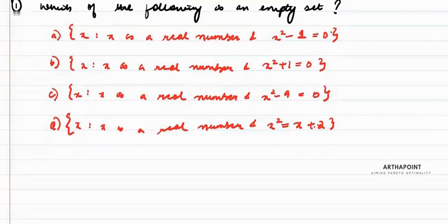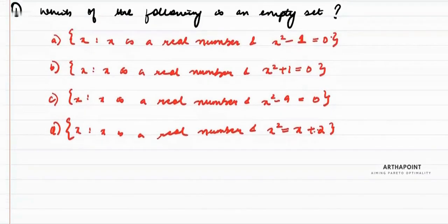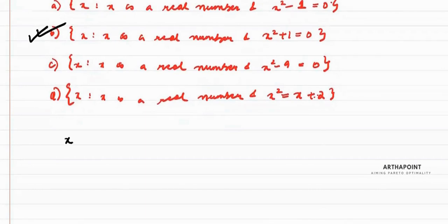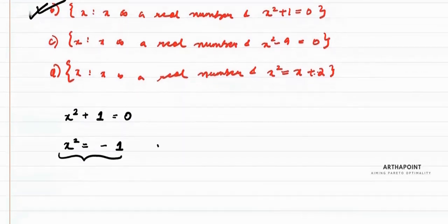Which of the following is an empty set — meaning no element belongs to that set? My claim is that the answer is B. Because if we take x² + 1 = 0, then x² = -1.